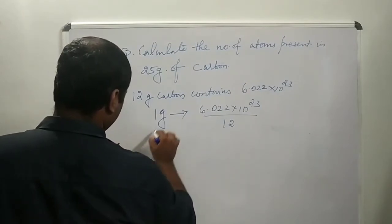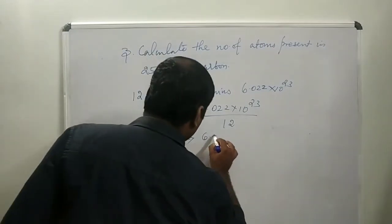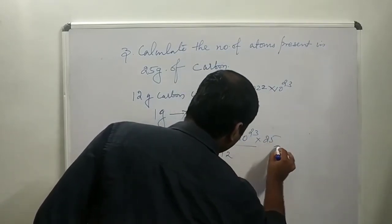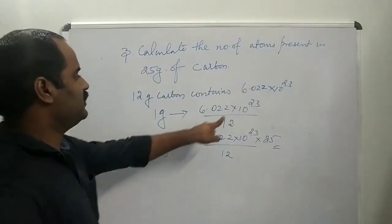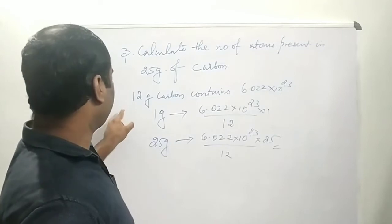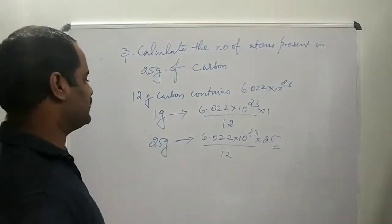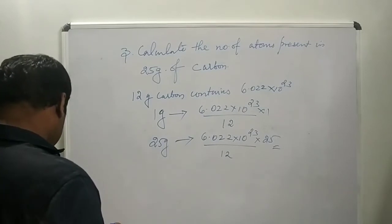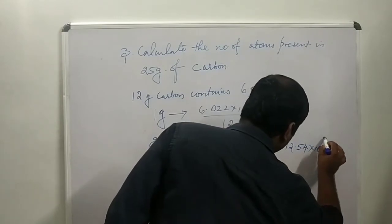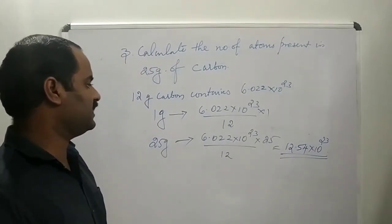For 25 grams, you multiply by 25: 25 grams of carbon contains (6.022 × 10²³ / 12) × 25 atoms. Therefore the answer is 12.54 × 10²³ atoms. That is the number of atoms present in 25 grams of carbon.